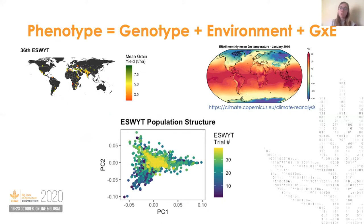Now we have the capacity to genotype the IWIN accessions at a really high level. Some nurseries have already been genotyped with GBS, and we're also working to impute nursery accessions based on resequencing of some of the CIMIT bread wheat founder lines. Many testing locations historically didn't have weather station infrastructure, so characterizing environmental conditions at each site wasn't always possible. However, now with reconstructed weather data from the ERA-5 reanalysis dataset from the European Center for Medium-Range Weather Forecasts, we have access to global hourly estimates of atmospheric variables on a 30-kilometer grid dating back to 1979. So now we can begin to couple the phenotypic records with high-quality genomic data and climate information.